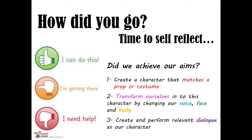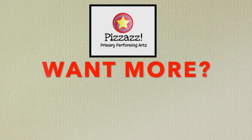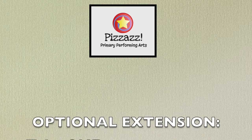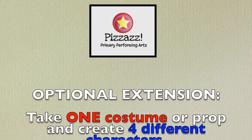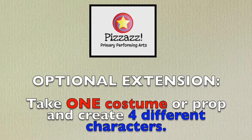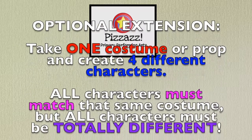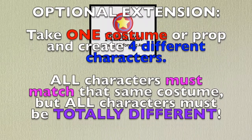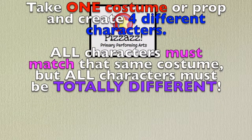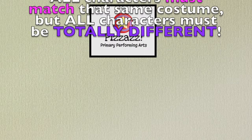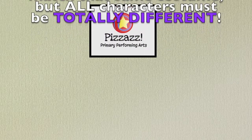We're coming to the end of our lesson. Do you want more? Well, here's an extension opportunity for you all — an optional activity you can do. Take one costume or prop and create four different characters. All the characters must match that costume or prop, but all four characters have to be totally different. A real challenge — see if you can achieve that.